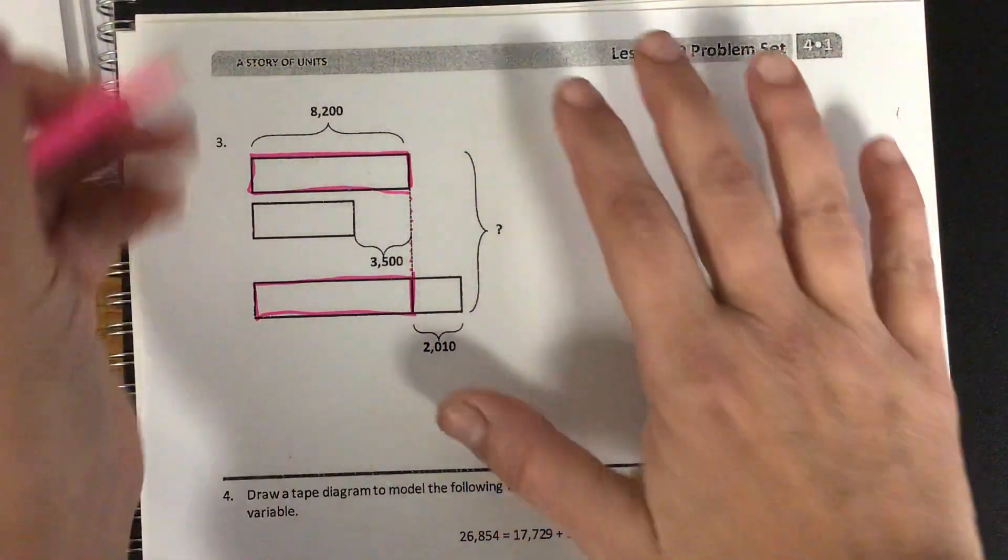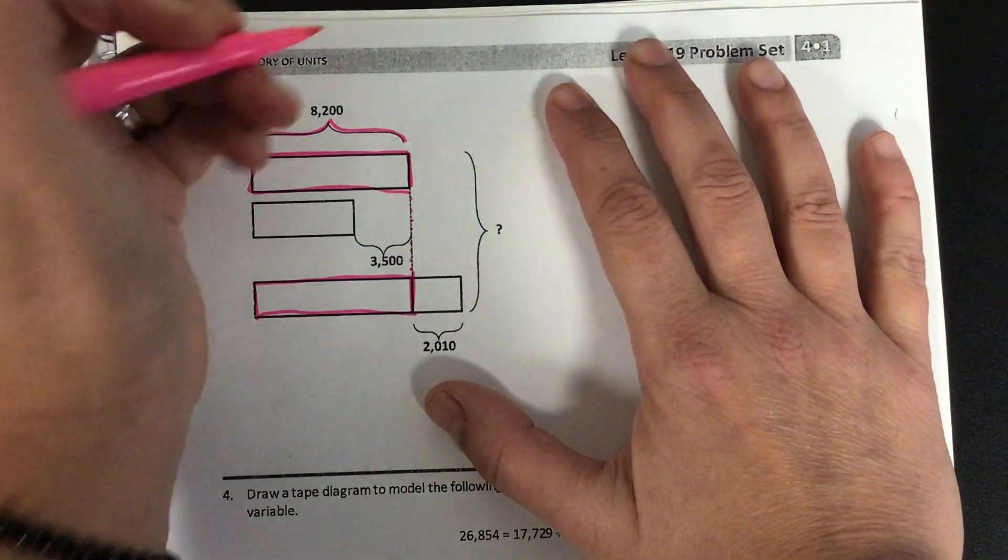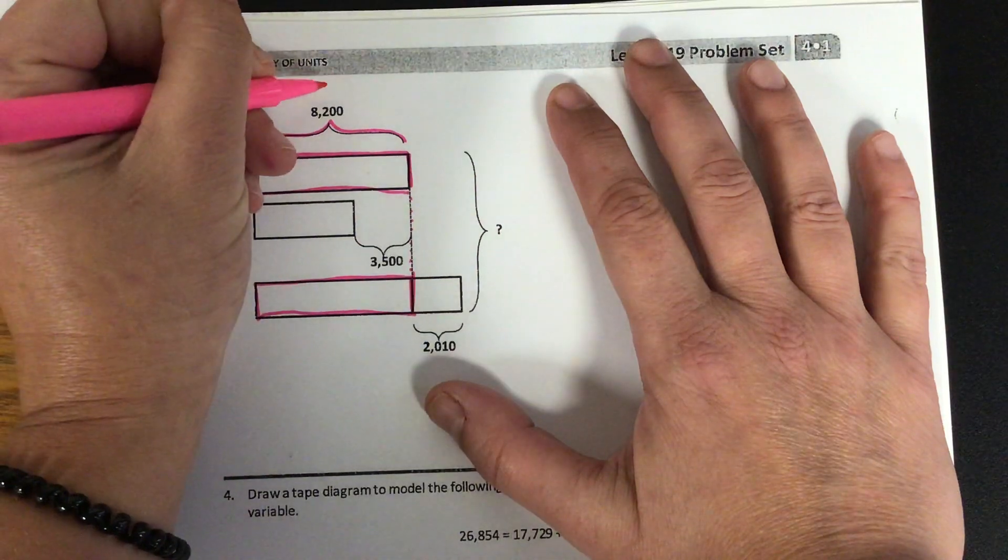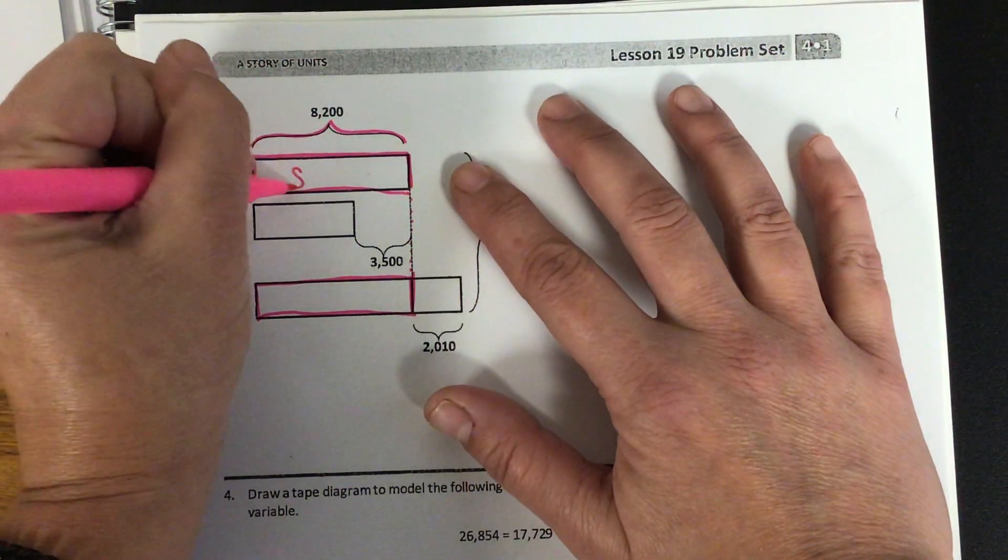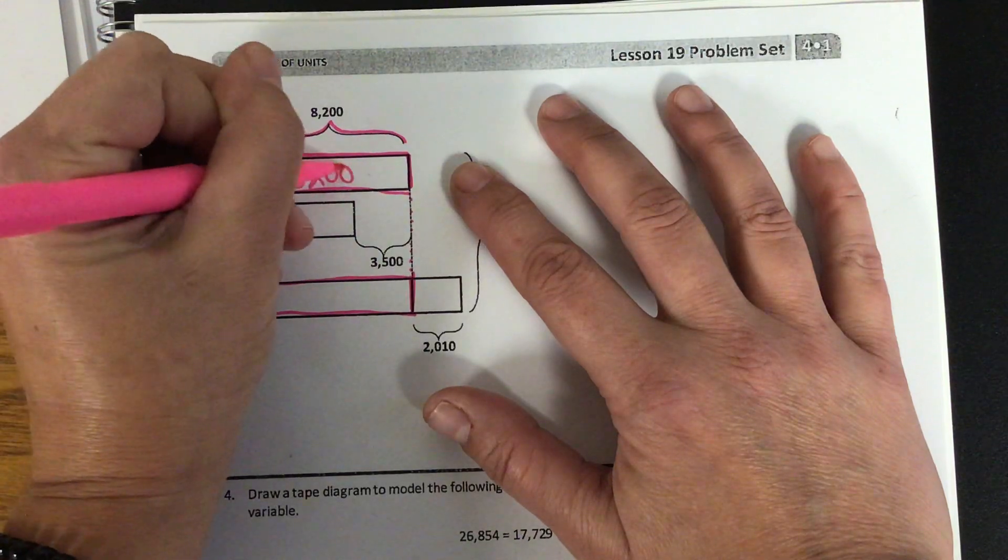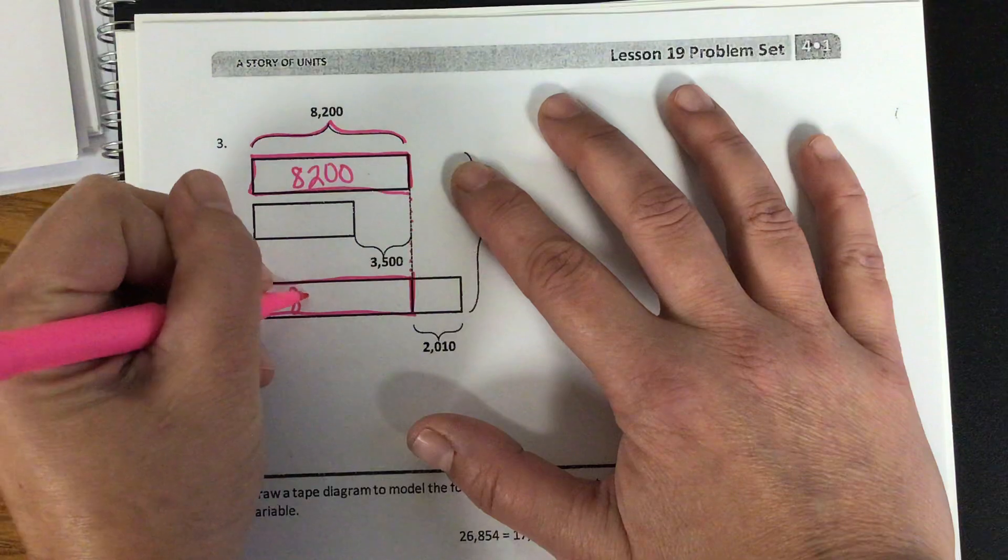And then it gives me this information right here, and it says 8,200. So I can infer that this is 8,200, and this tape diagram is 8,200.